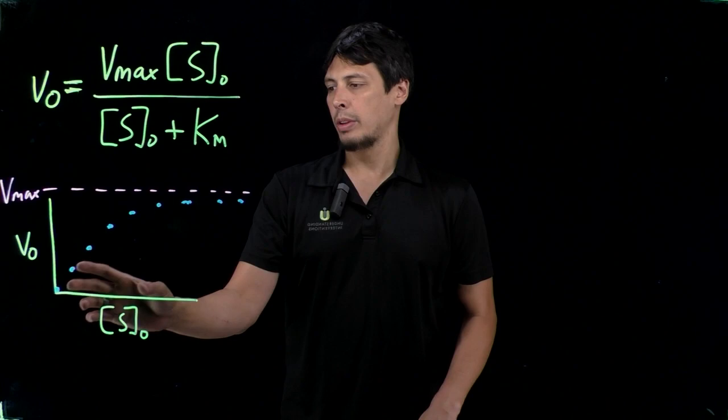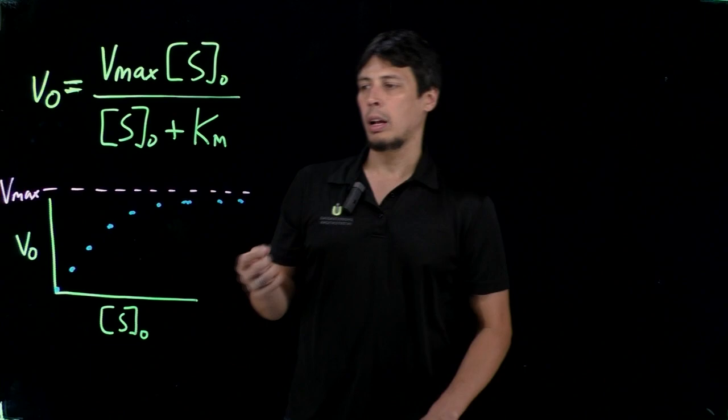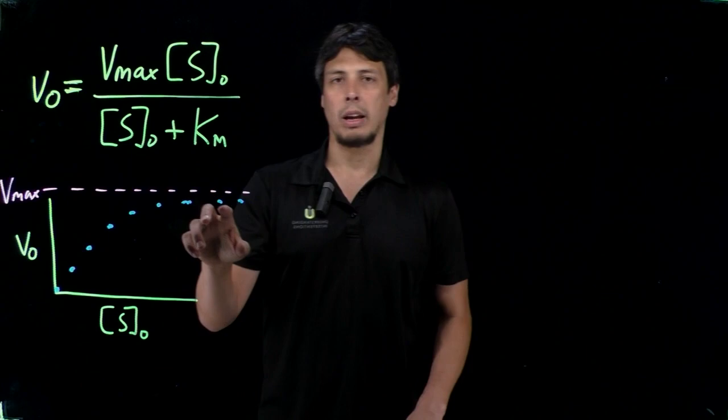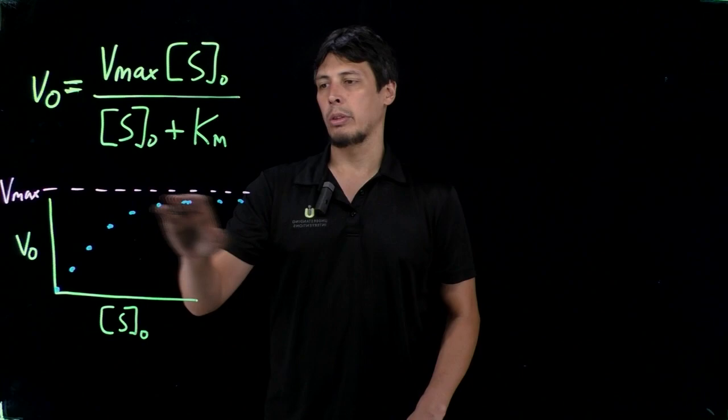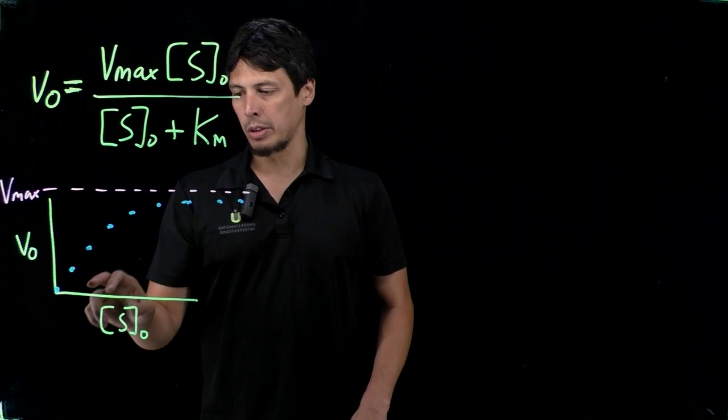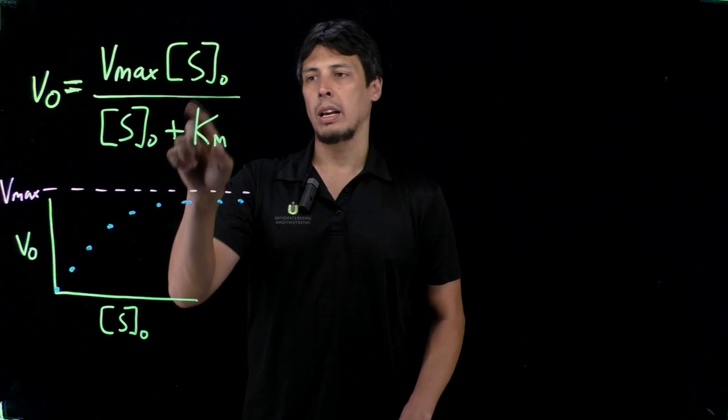What we would expect to see based on this equation is some sort of hyperbolic plot. These are our data points shown here in blue. We would expect saturation behavior approaching an asymptote shown here in red, which is the Vmax. At one-half Vmax, we could project that down to the x-axis and get Km, the Michaelis constant.